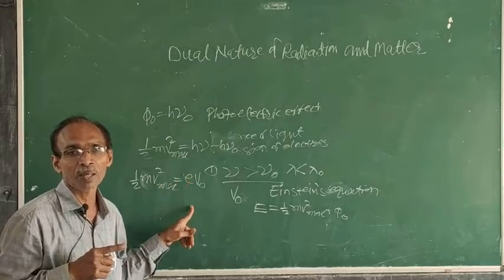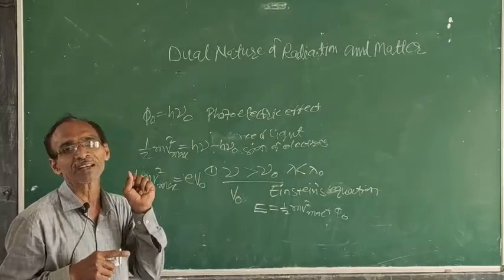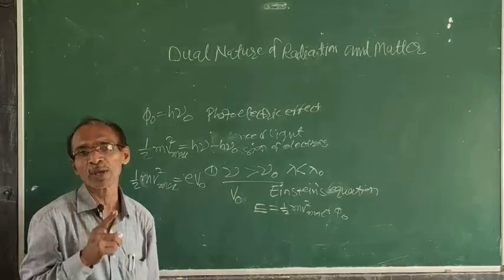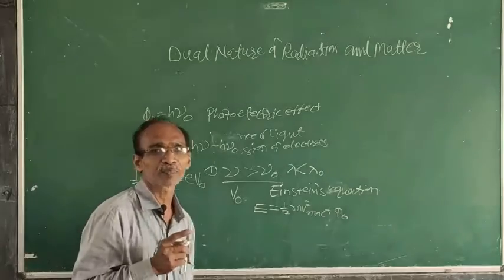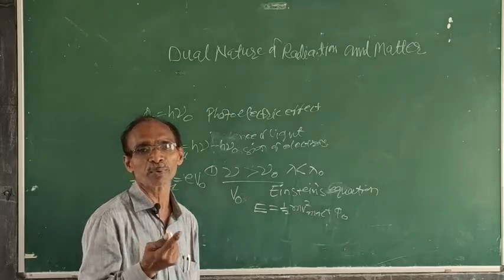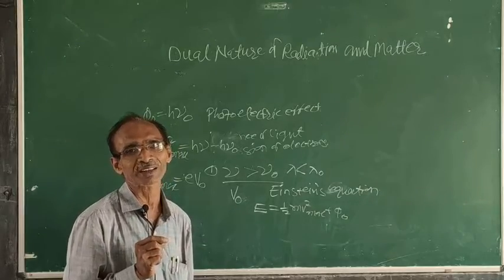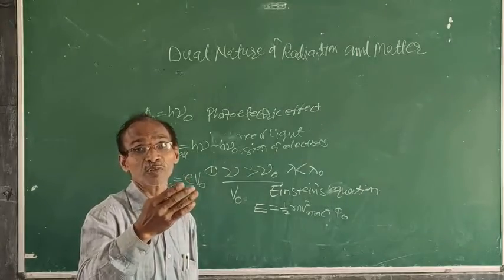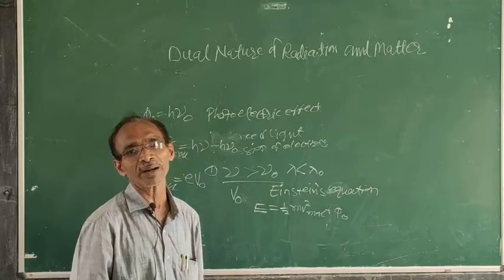Here we have a device known as a photocell. A photocell is a device that works on the principle of the photoelectric effect. The principle is that light falling on a metallic plate is converted into current.